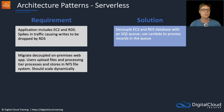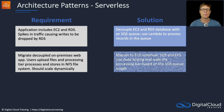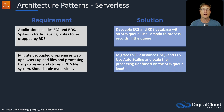Migrating a decoupled on-premises web app where users upload files and a processing tier processes and stores them in an NFS file system, and the solution should scale dynamically. For this, you might migrate to EC2 instances, use SQS for the queue and EFS for the file system, and use auto scaling to scale the processing tier based on the SQS queue length.